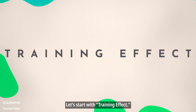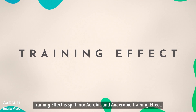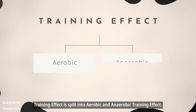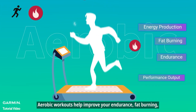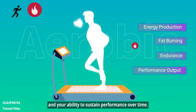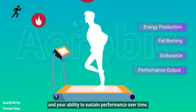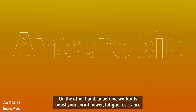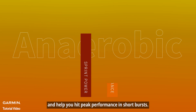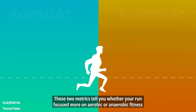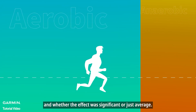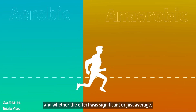Training effect is split into aerobic and anaerobic training effect. Aerobic workouts help improve your endurance, fat burning, and your ability to sustain performance over time. Anaerobic workouts boost your sprint power, fatigue resistance, and help you hit peak performance in short bursts. These two metrics tell you whether your run focused more on aerobic or anaerobic fitness, and whether the effect was significant or just average.